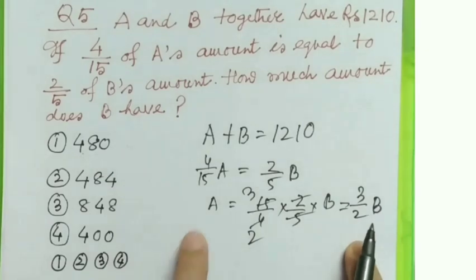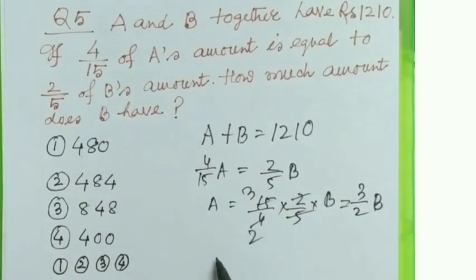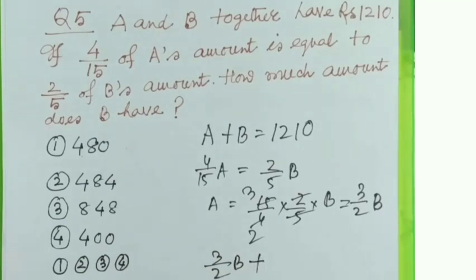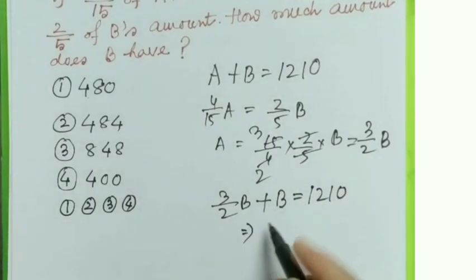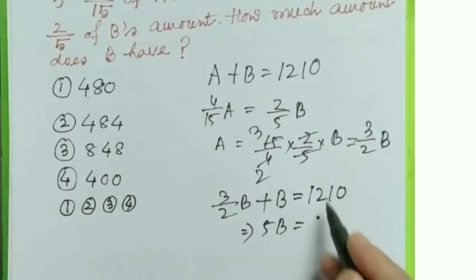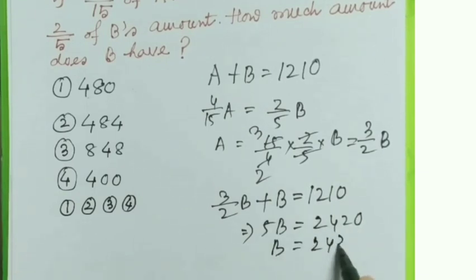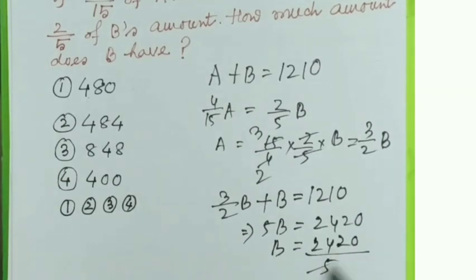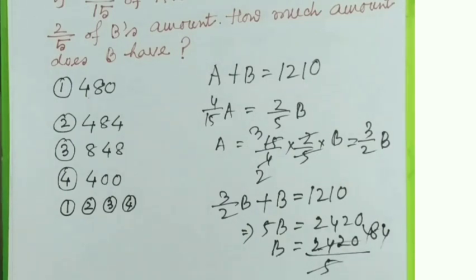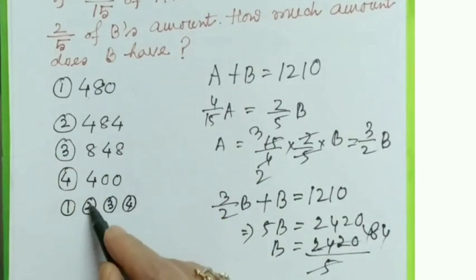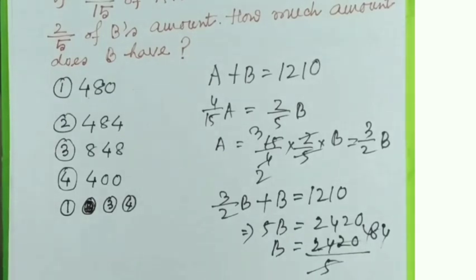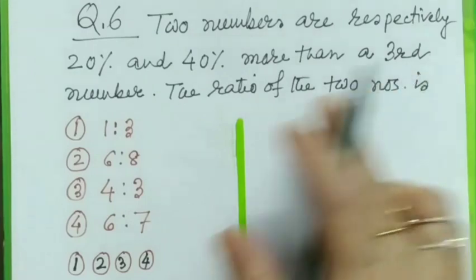Simplifying: a = (3/2)b. Substituting into a + b = 1210: (3/2)b + b = 1210, which gives (5/2)b = 1210, so 5b = 2420, and b = 2420 ÷ 5 = 484. So B's share is rupees 484, which is option 2.